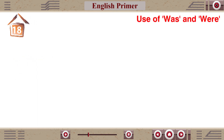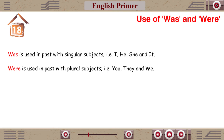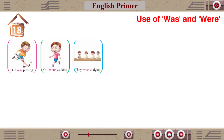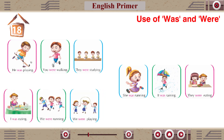Chapter 18: Use of Was and Were. Was is used in past with singular subjects — that is I, He, She and It. Were is used in past with plural subjects — that is You, They and We. He was playing. You were walking. They were studying. She was running. It was raining. They were eating.